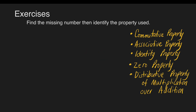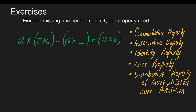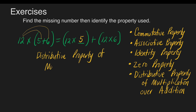Let's have another one: 12 times the quantity 5 plus 6 is equal to quantity 12 times blank, plus quantity 12 times 6. If you inspect it, 12 is being distributed. So 12 times blank corresponds to 12 times 5, and our answer in the blank is 5. The property used is distributive property of multiplication over addition.